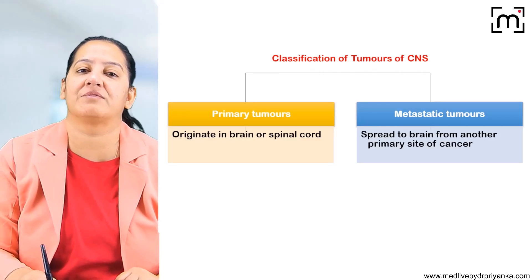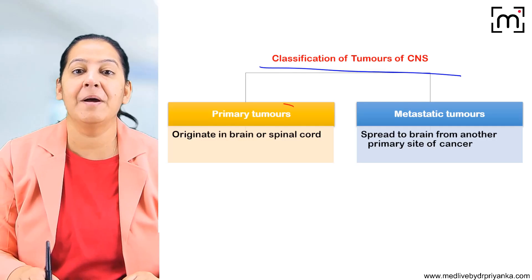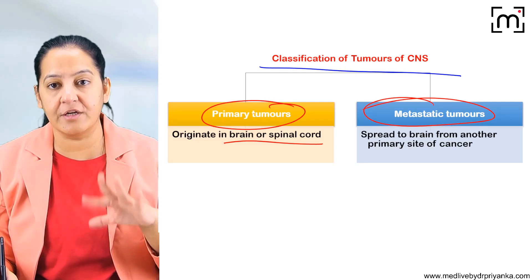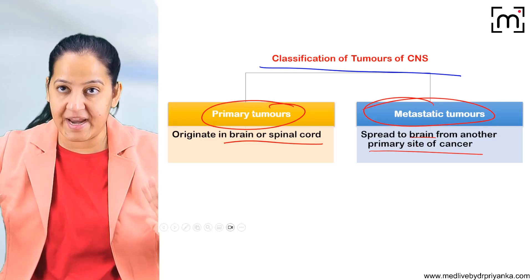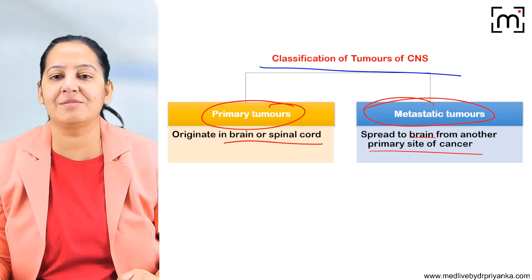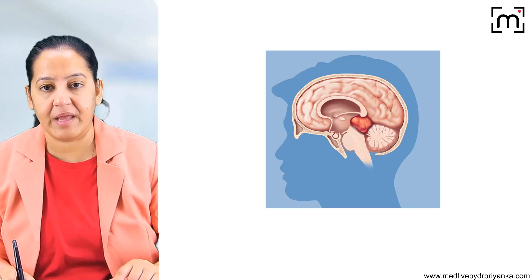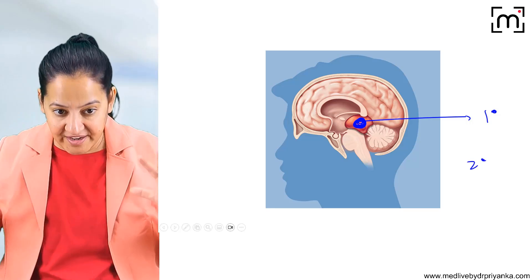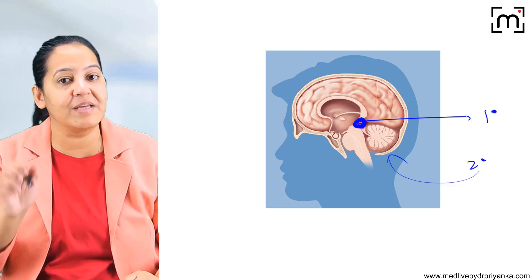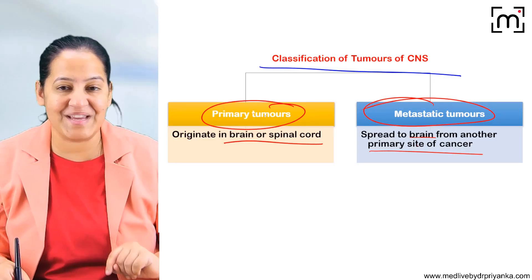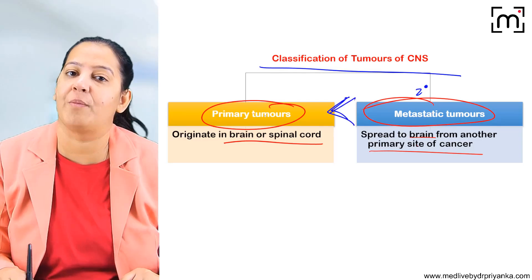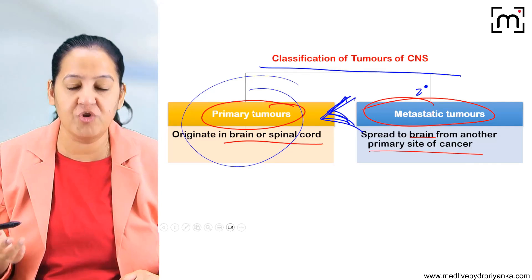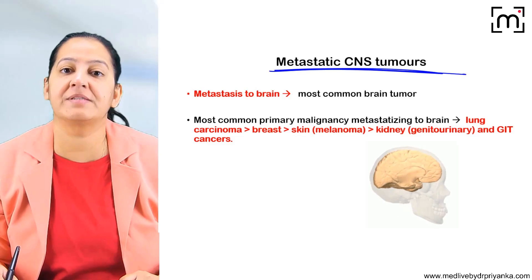The microglial cells are the macrophages of the brain and spinal cord. Now, in the brain there are two types of tumours: primary tumours and metastatic tumours. Primary tumours are those that arise in the brain or spinal cord only. Metastatic tumours are those where the primary cancer is somewhere else in the body and is metastasising to the brain as a secondary. Metastatic tumours are more common than primary tumours in the brain and spinal cord.